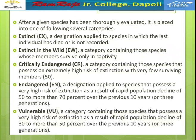After a given species has been thoroughly evaluated, it is placed into one of several categories. The first category is extinct — a designation applied to species in which the last individual has died or is not recorded. For example, dinosaurs, dodo, sea cow, and passenger pigeon are all extinct.